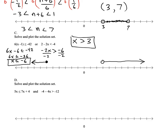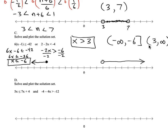To write it in interval notation, we use a union. Our solution set is spread across two parts of the number line. The left part is described by negative infinity to negative 6 with a bracket. The right part is described by 3 to infinity. We have two different intervals, and to join them as one final solution set, we put a 'U' between them — that means union, indicating the solution set is made up of both regions.